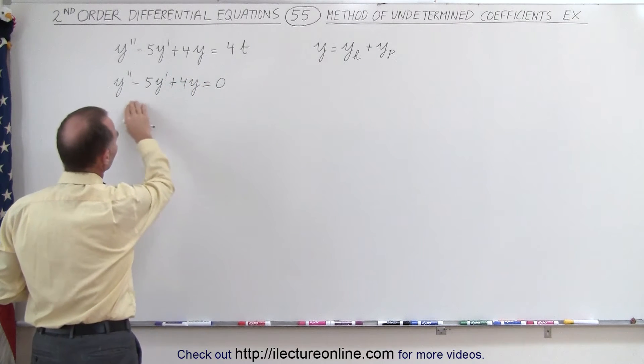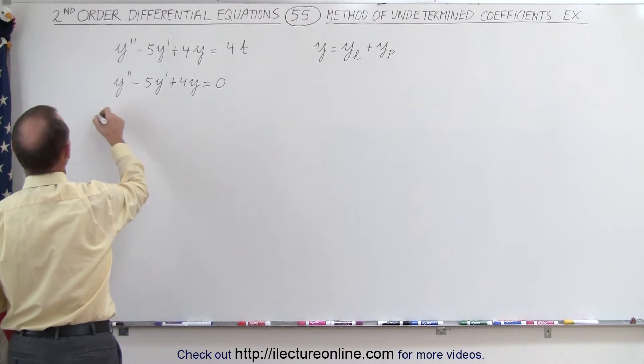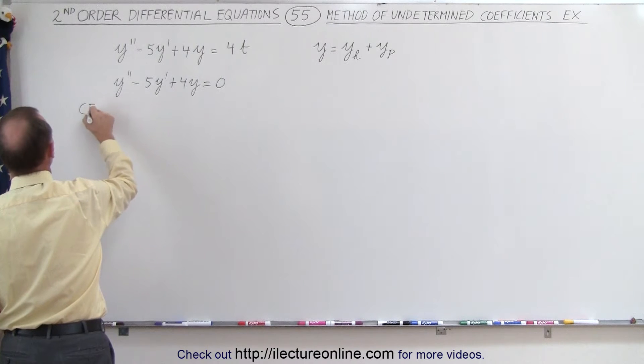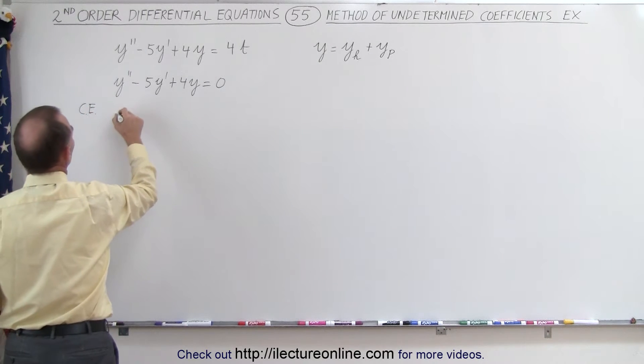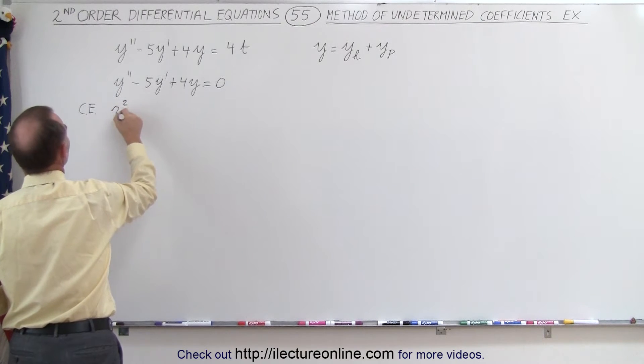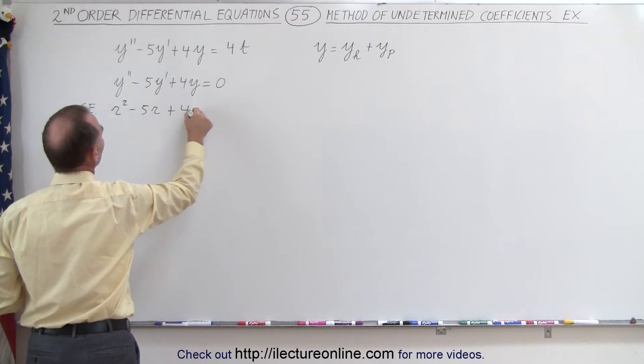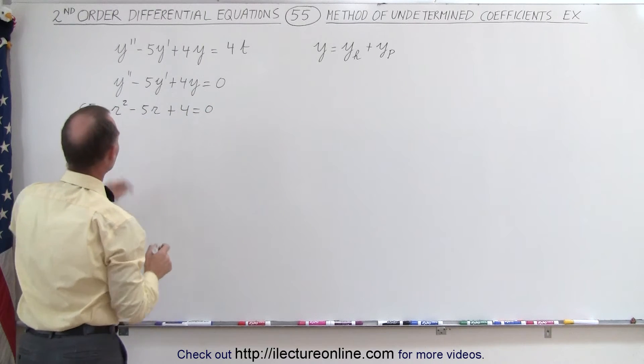So now we're going to solve this equation by getting the characteristic equation. The characteristic equation is going to look like this: r² - 5r + 4 = 0.